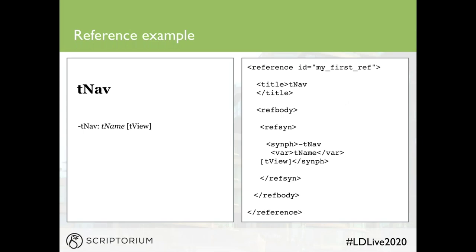Here's an example of a reference topic for a command called tnav. On the left we see the topic title, and below it the syntax — the '-tnav' command, a variable or replaceable piece of text where the user types something, and an optional parameter called tview. On the right we see the reference container, title, reference body, and within the body a refsyn element containing the actual syntax description, which includes tnav, the name as a variable, and other properties.